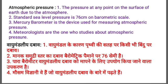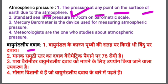Moving towards our last topic: atmospheric pressure. What is atmospheric pressure? It is the pressure at any point on the surface of the Earth due to the atmosphere. The atmosphere is the envelope of air surrounding the earth. That column of air basically exerts some sort of pressure at any point on the surface, and that pressure is known as atmospheric pressure.